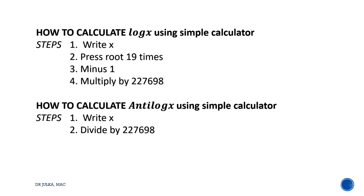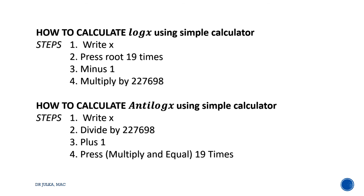Then divide by 2.276698, then plus 1 in the result. And in last, press multiply and equal 19 times — multiply equal 1, multiply equal 2, multiply equal 3, and so on 19 times.